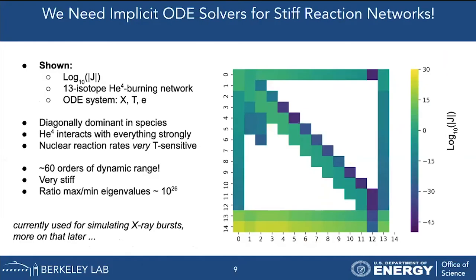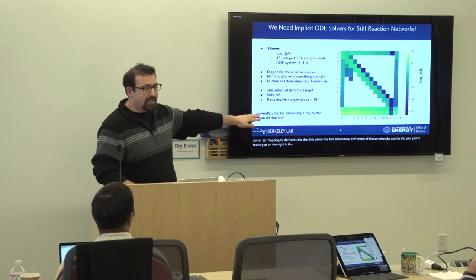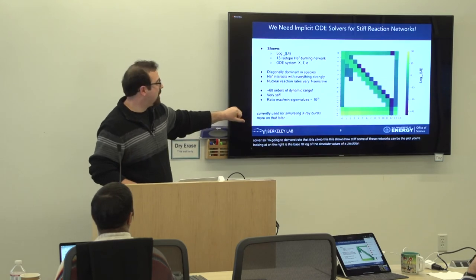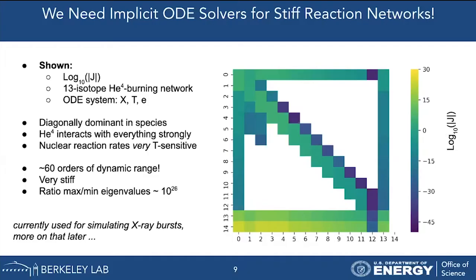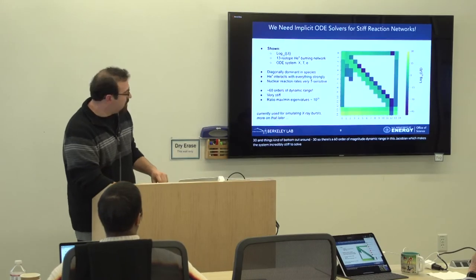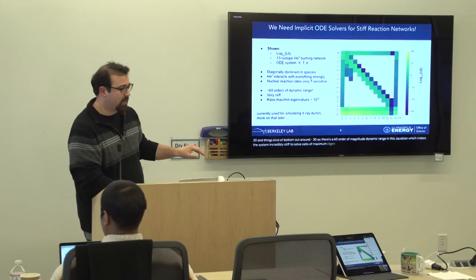The maximum scale is 30 and things bottom out around minus 30, so there's a 60 order-of-magnitude dynamic range in this Jacobian, making the system incredibly stiff to solve. The ratio of maximum eigenvalues of this Jacobian is 10^26. The best way we've found to solve this is using VODE. One of the things I did was port this from Fortran to CUDA Fortran so we can run it on GPUs. The approach uses the backward differentiation formula for an implicit ODE solver; VODE differentiates and linearizes this to solve the nonlinear equation iteratively using the Jacobian.